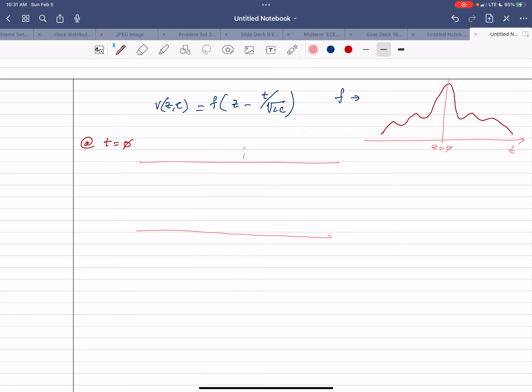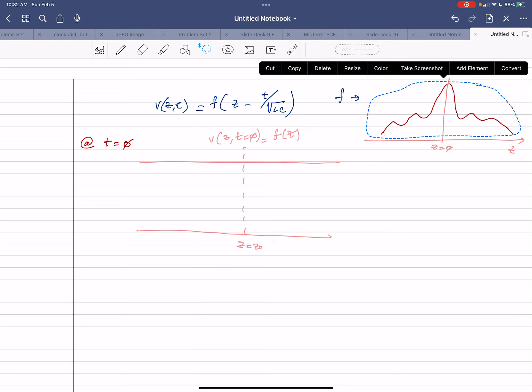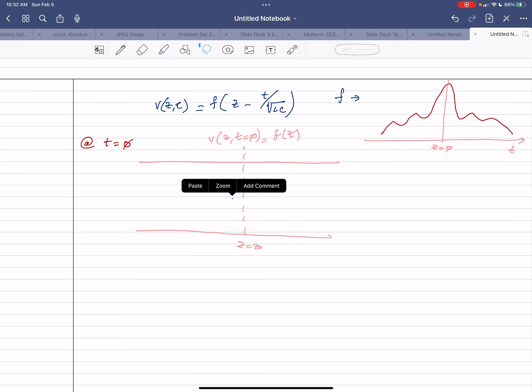So I'm going to end up with f of z. So at z equal to zero, I'm going to have v at z at time equal to zero is going to be f of z. So it's going to be this original waveform. So the peak is going to be right at z equal to zero at time t equal to zero.